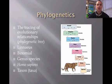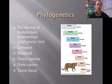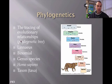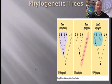Phylogenetics is the tracing of evolutionary relationships through the phylogenetic tree. Remember: Kingdom, Phylum, Class, Order, Family, Genus, Species — 'King's Play Chess On Flat Green Stools.' The last two taxa are genus and species, which together form our scientific name, called binomial nomenclature. Genus is always first, species is second. Our scientific name is Homo sapiens — Homo is our genus, sapiens is our species.